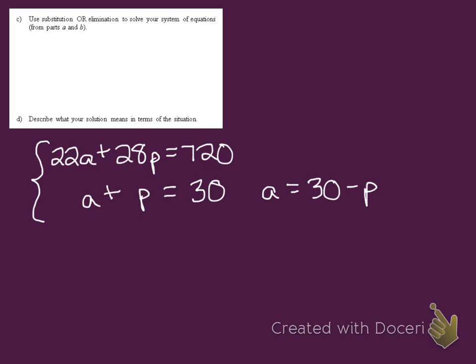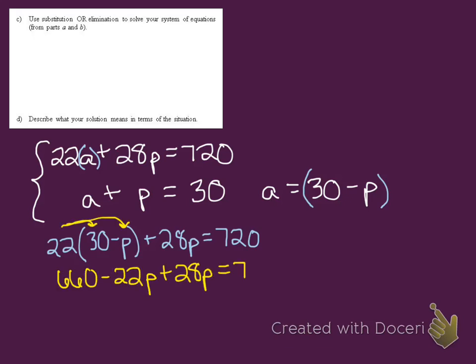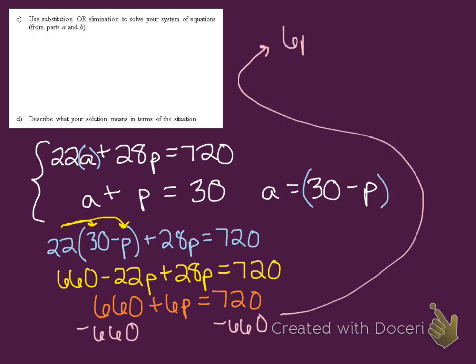Now what I want to do is take that equation and plug it into the other rule I haven't messed with yet anywhere I see an A. So now I can rewrite the top rule, replacing A with 30 minus P. Now I have an equation that has only one variable in it, the letter P, and so I can take whatever algebraic steps I need to solve for P. Start by distributing the 22, then combine the like terms, subtract 660 from both sides, and then divide both sides by 6. We end up with the result of P being equal to 10.